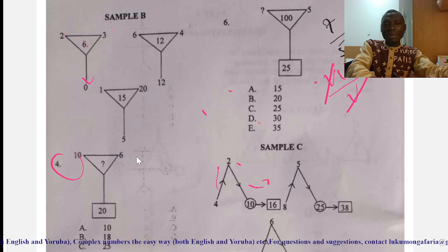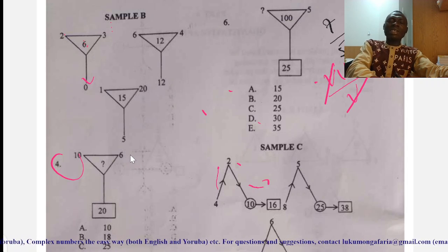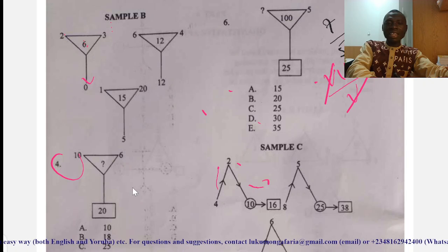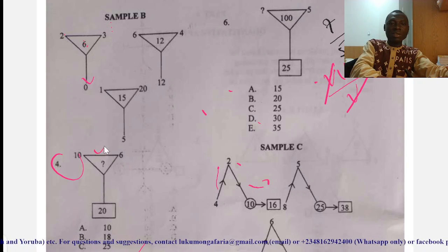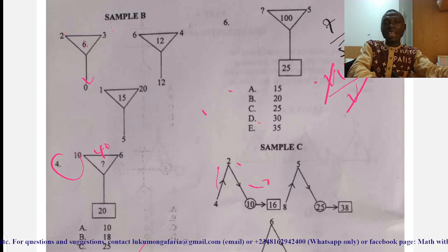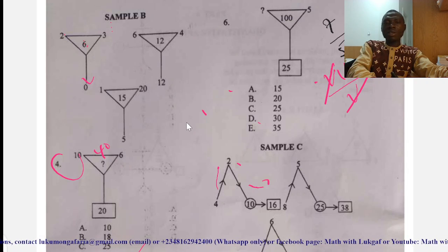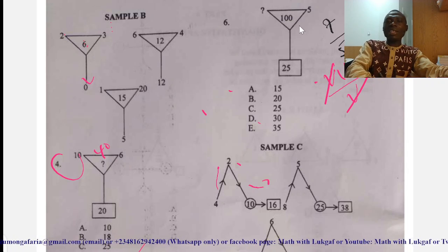So, 10 times six here will give me 60. Now, what are you going to subtract from 60 to give you 20? I think that is 40. So, it means you are going to have 40 here. That is 10 times six will give you 60. 60 minus 40 will give me 20.